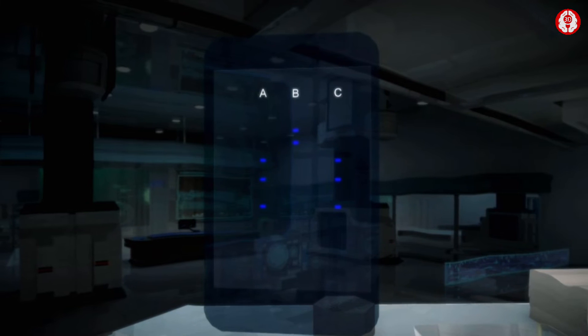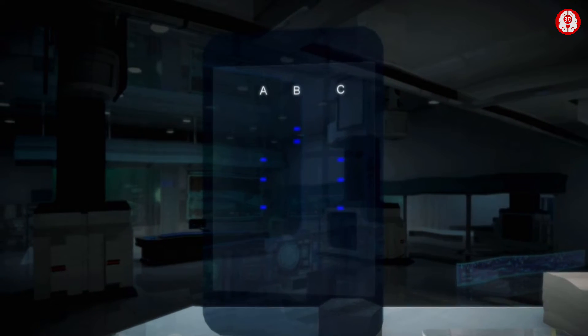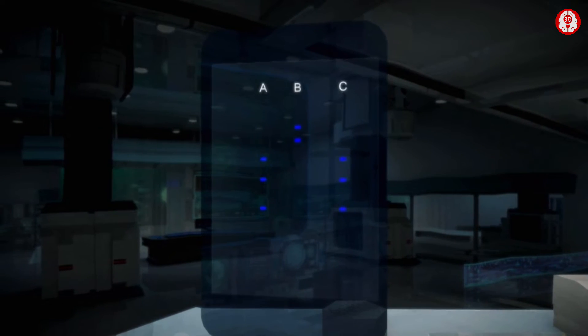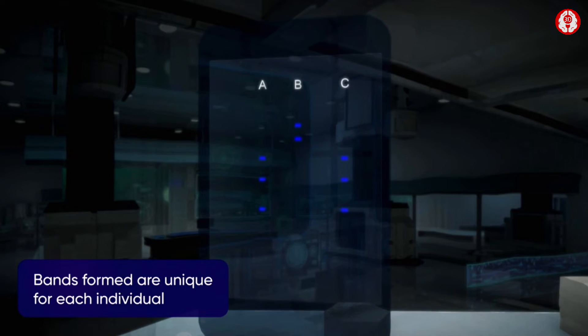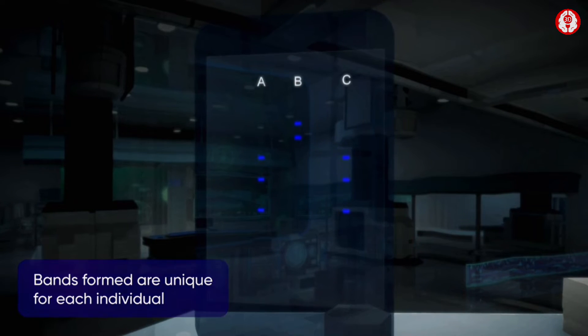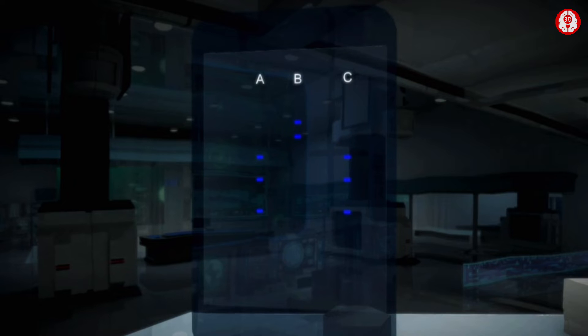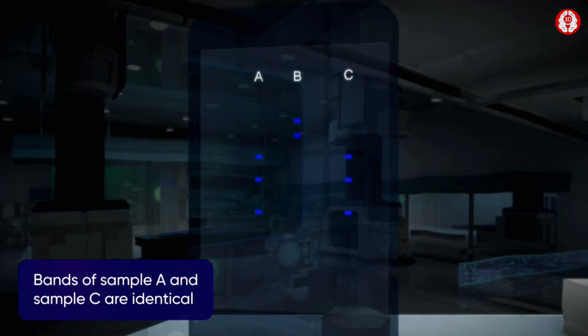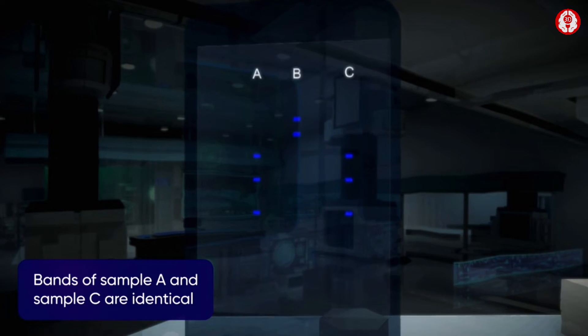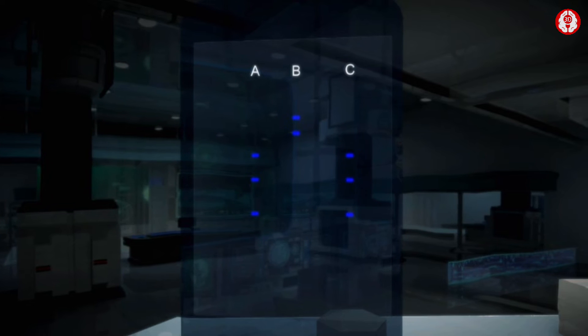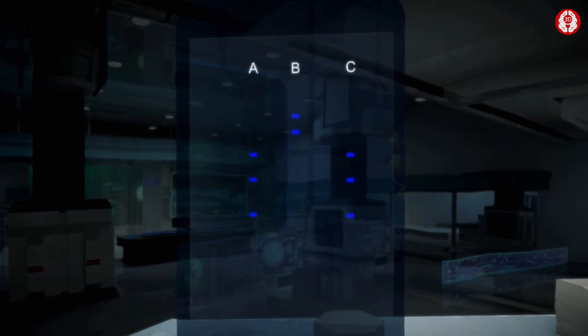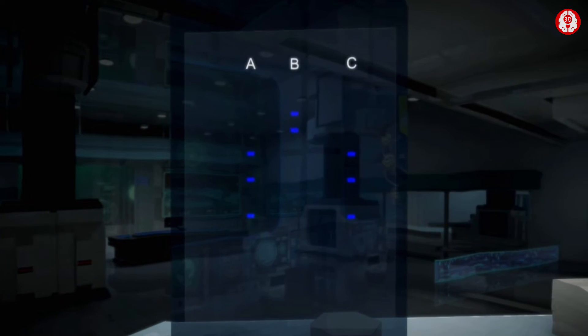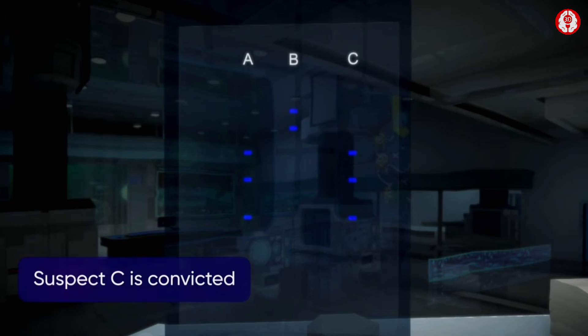Since the enzymes cut the DNA into a unique combination of lengths, the bands formed will be distinct for different individuals. But here we find that the bands for sample A and sample C are the same. This shows that DNA samples A and C are from the same individual and the suspect is identified.